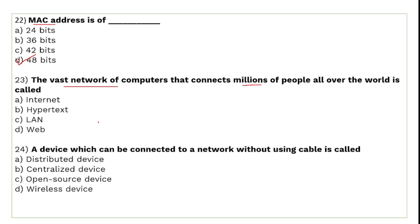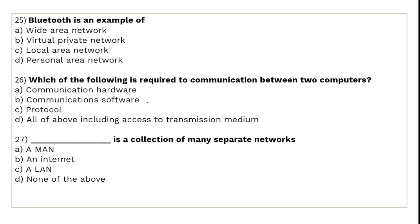A device which can be connected to a network without using a cable or wire is called a wireless device. Bluetooth is an example of wireless technology. With Bluetooth, you can transfer data — including songs and files — from one device to another without using any cable.